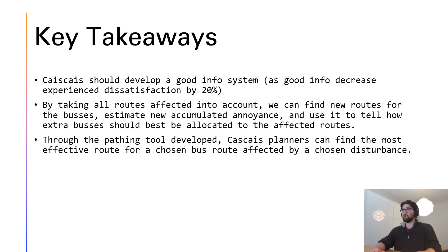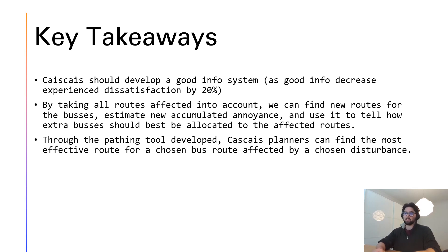The key takeaways are: Cascades should develop a good information system. By taking all affected bus routes into account, we can find new routes, estimate accumulated annoyance, and determine how extra buses should best be allocated. Through the pathing tool developed, Cascades planners can find the most effective route for a chosen bus route affected by a chosen disturbance.